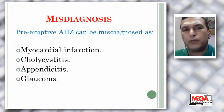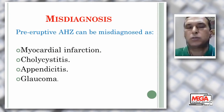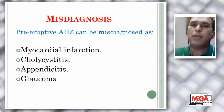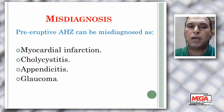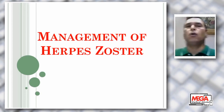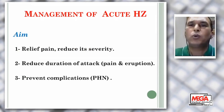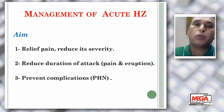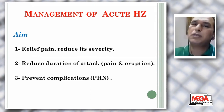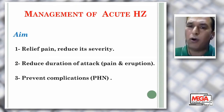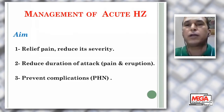Misdiagnosis of the pre-eruptive stage of acute herpes zoster: before eruption, you cannot diagnose acute herpes zoster — you can only suggest it if the pain is dermatomal. Myocardial infarction is one of the misdiagnoses, as well as polyserositis, appendicitis, and glaucoma. Now, management of herpes zoster: the aim is to relieve pain and reduce its severity, reduce the duration of the attack and patient suffering, reduce the duration of eruption, and — most importantly — prevent complications.